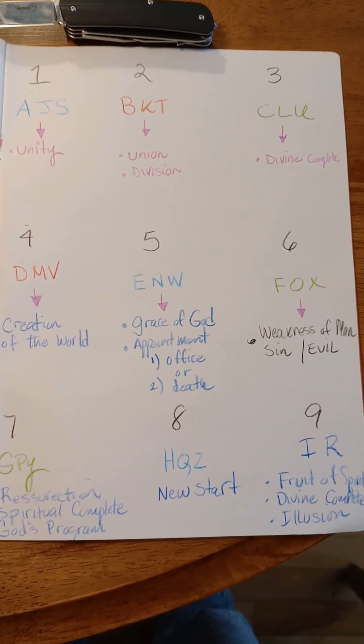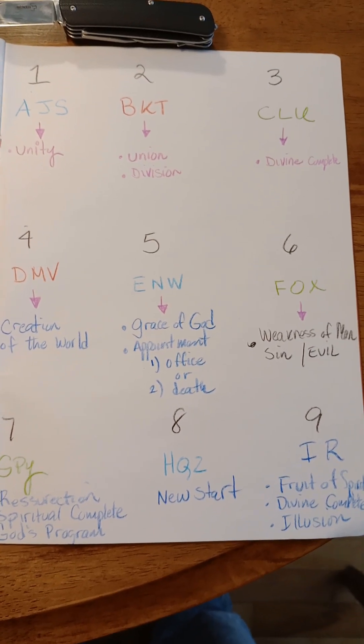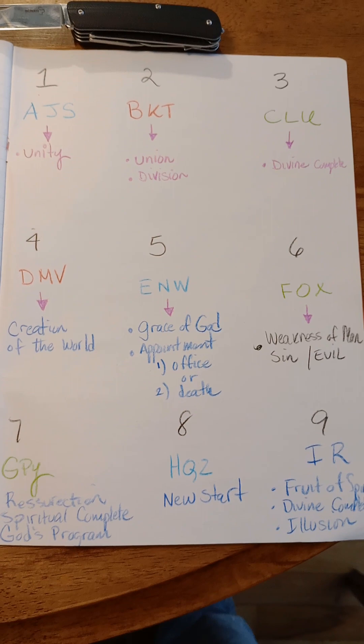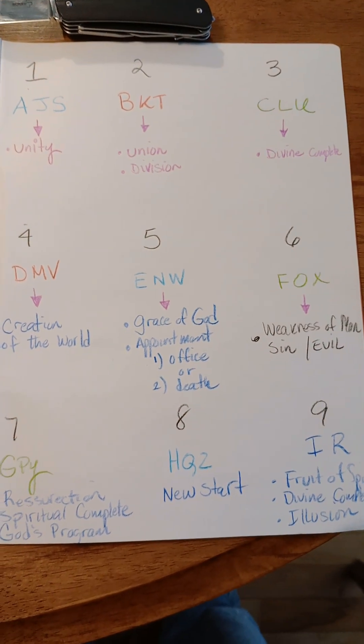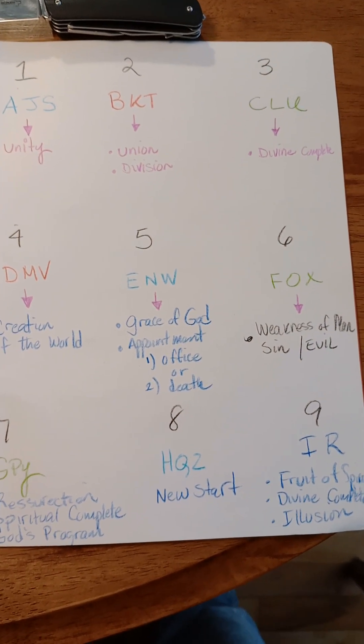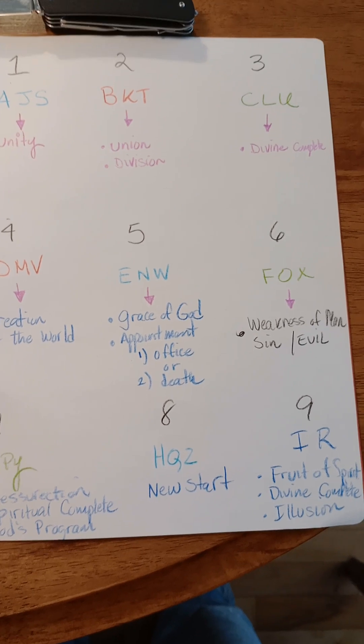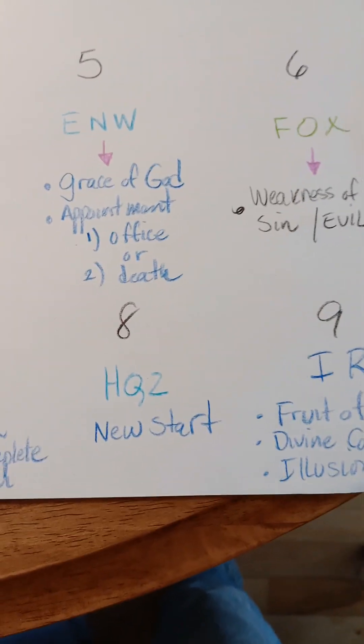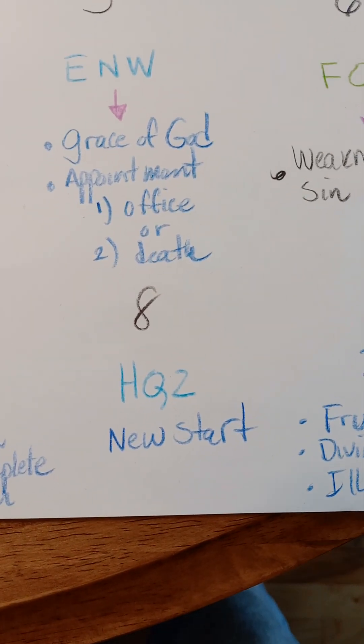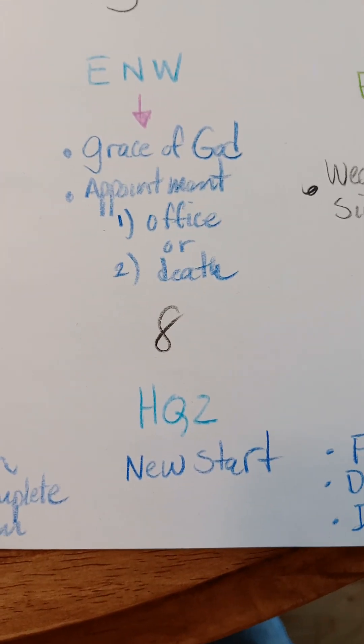You take the numbers from 1 to 26, or your 26 letters in the English alphabet, and you add up any two-digit number. For example, Z is 26, 2 plus 6 is 8. That's why Z is going to be a number 8.